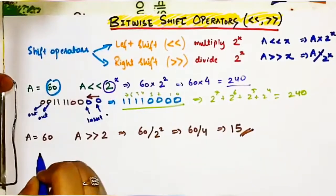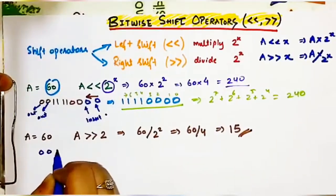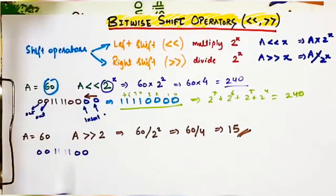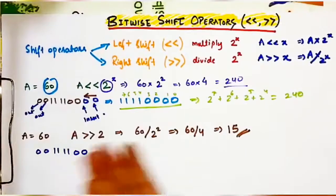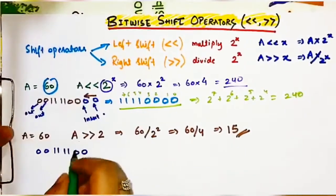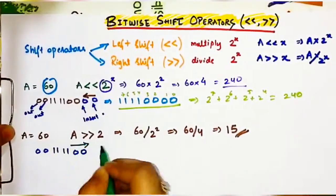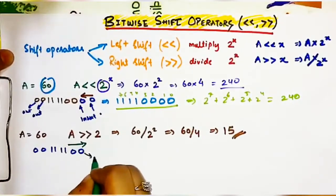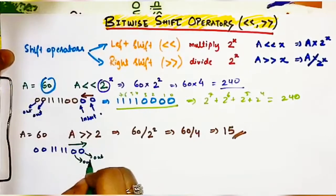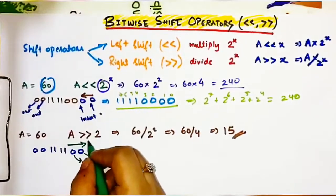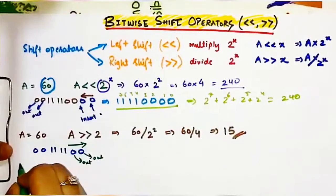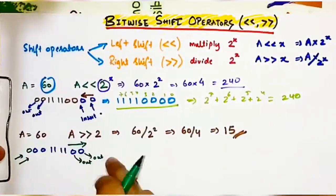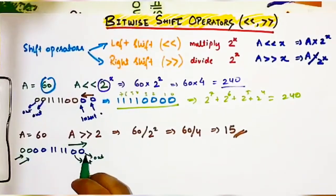The binary number for 60 is 00111100. Right shift means shifting the bits towards the right side. The digits from the right side will be popped out — only 2 digits, because we are right shifting by 2. On the left side, we will insert 2 more zeros.